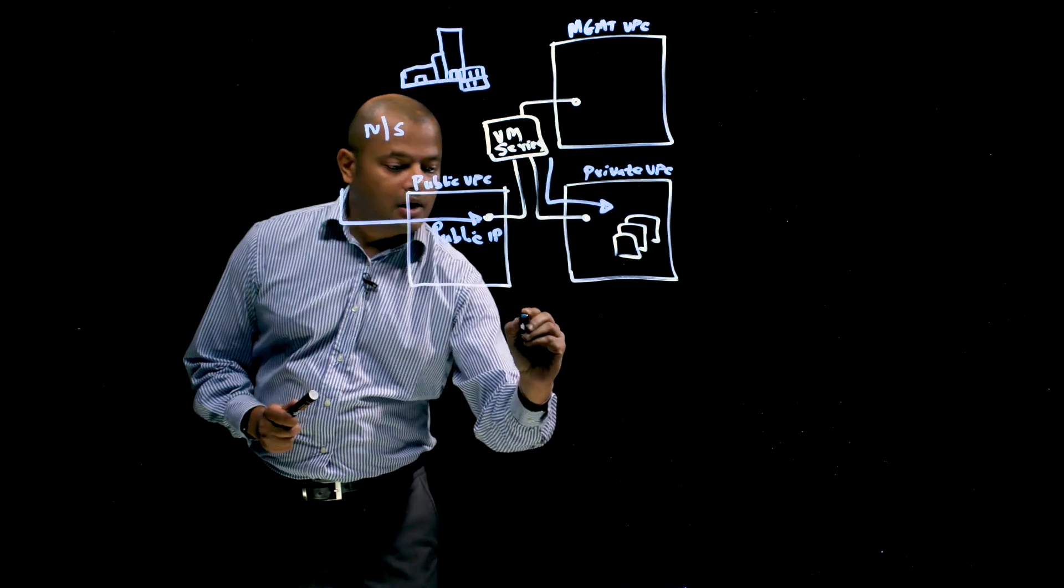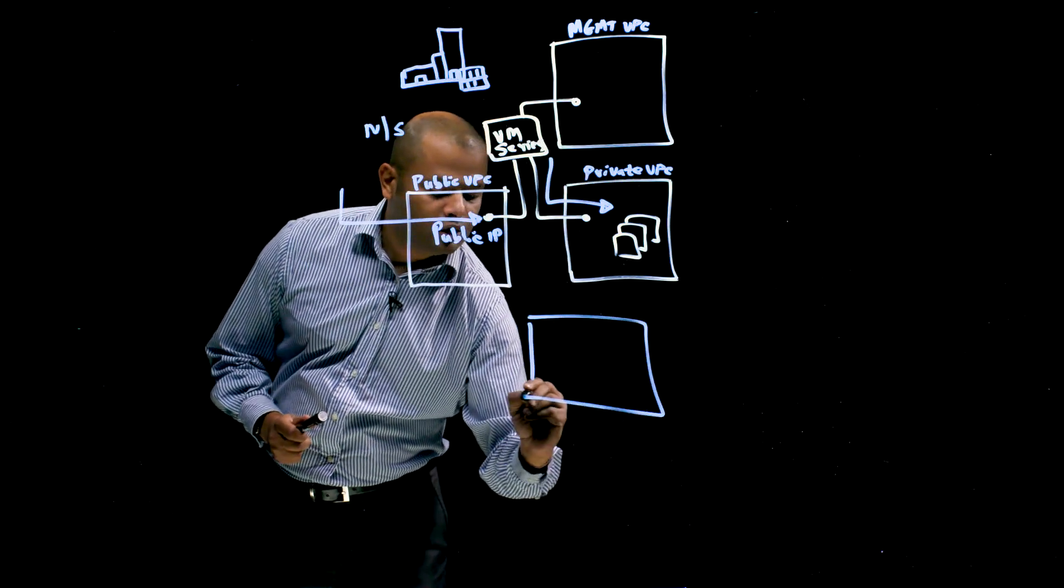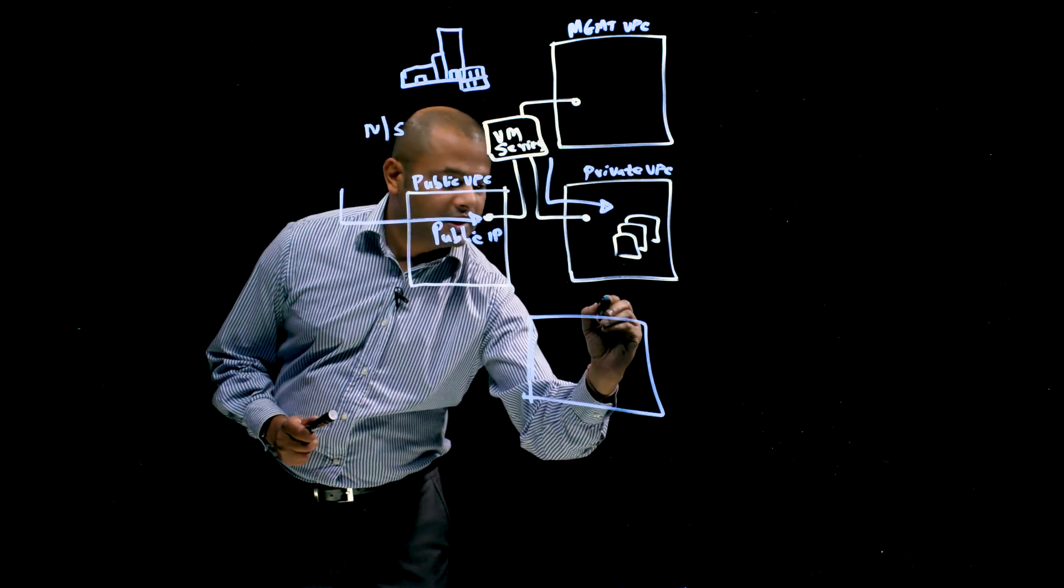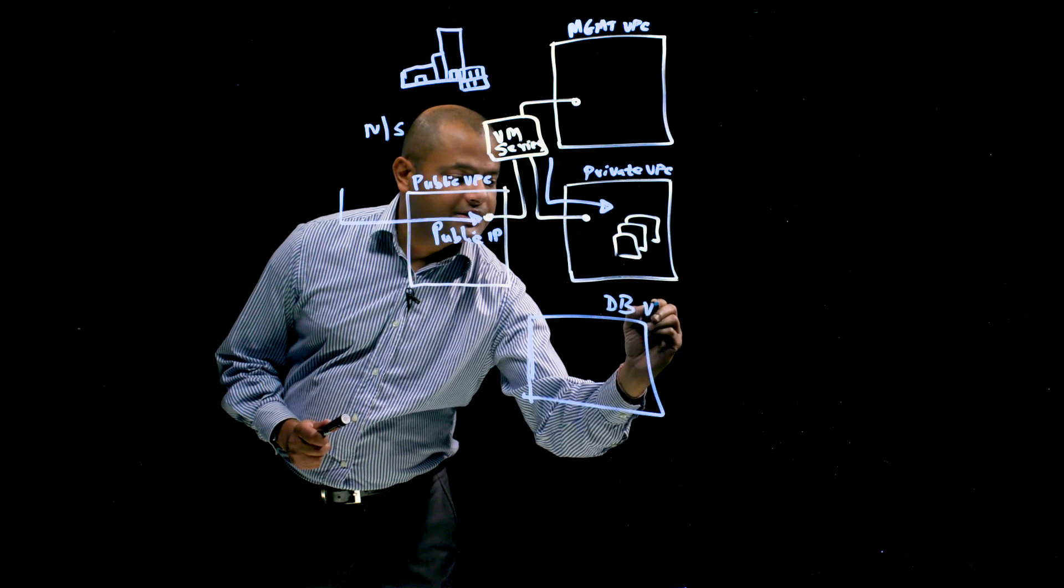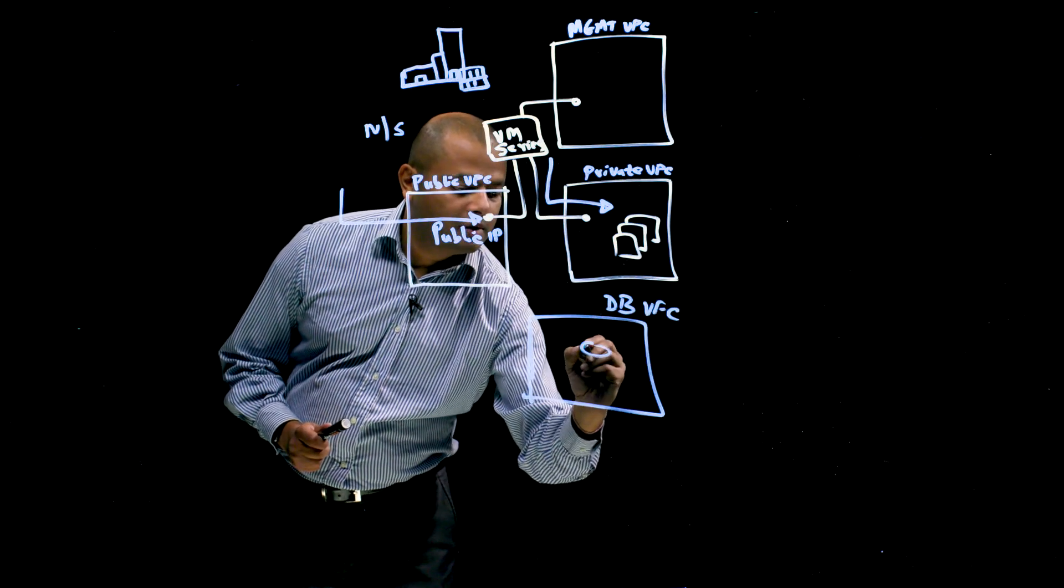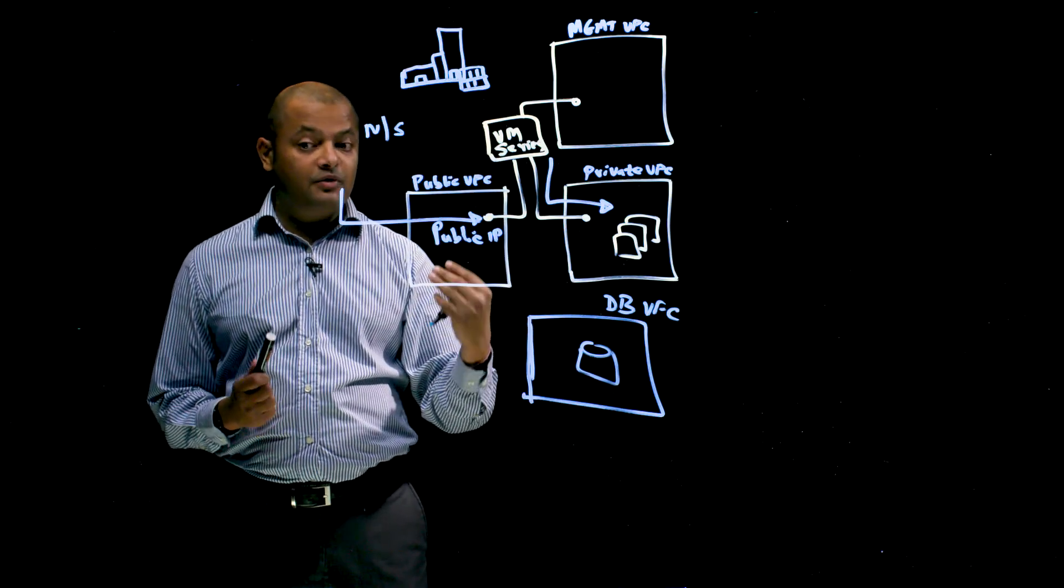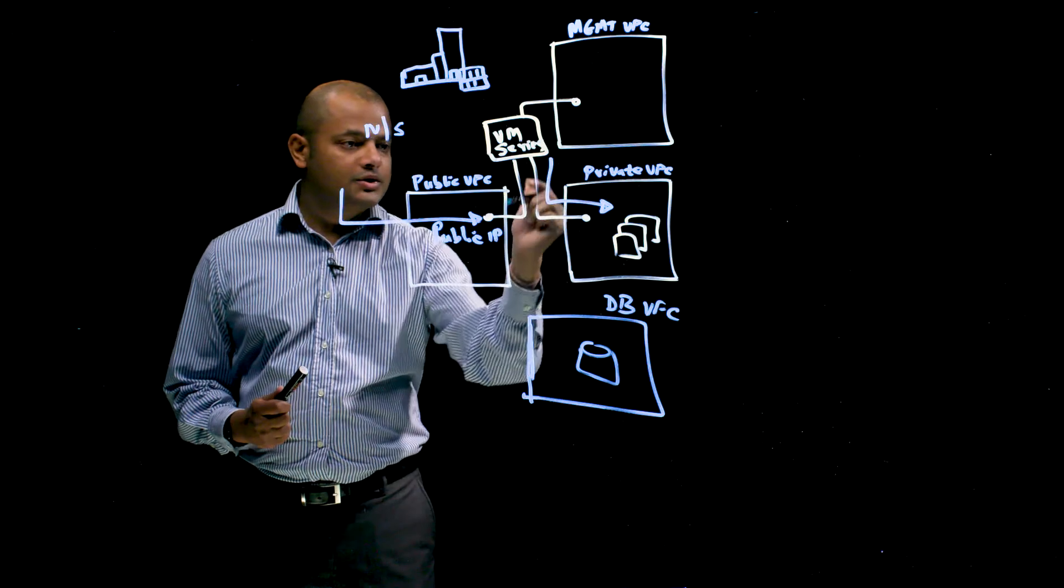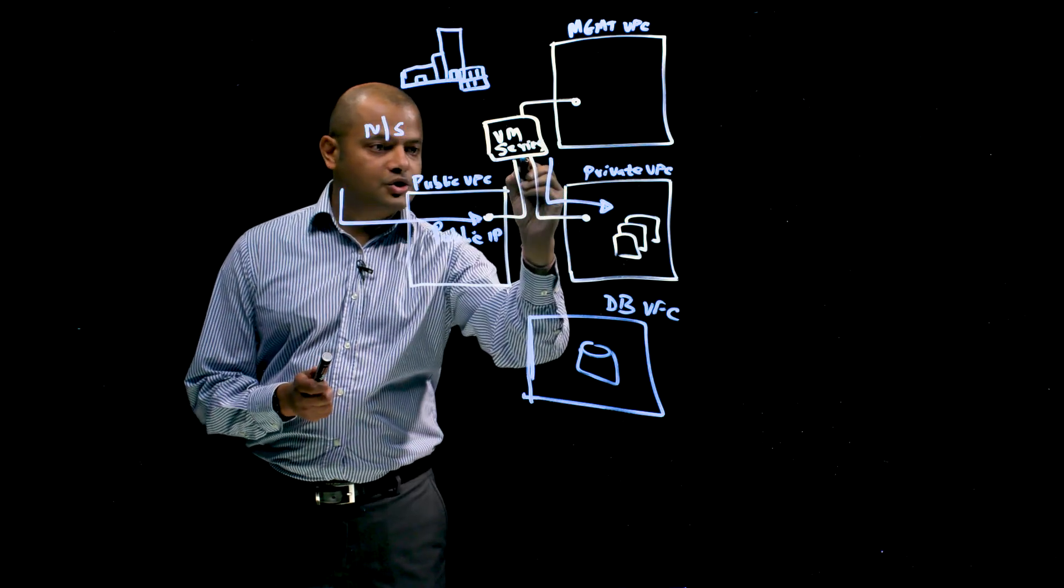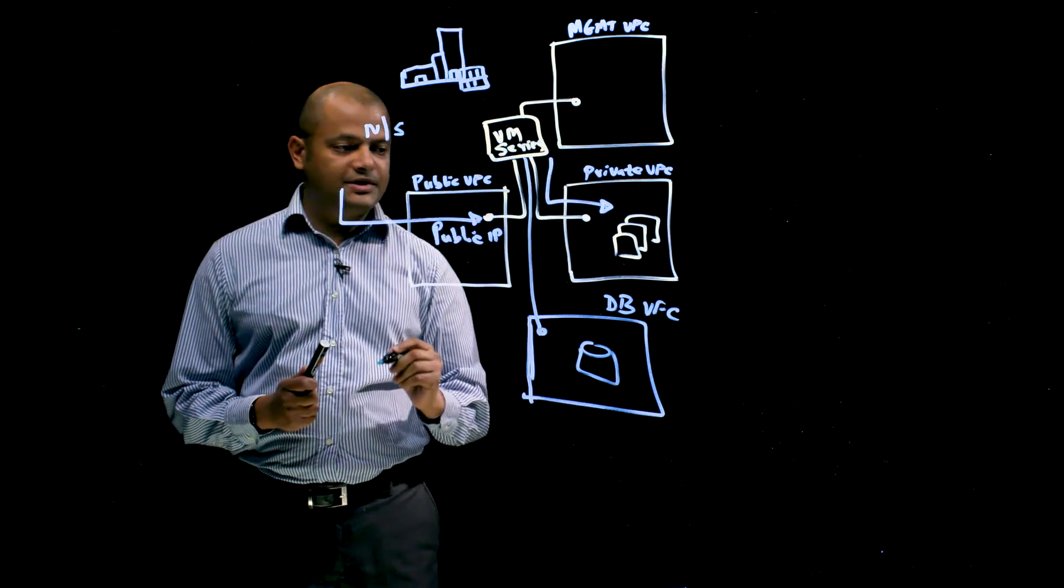You've got this deployment and you may have additional VPCs in your Google Cloud project. So let's say this is a database tier VPC. And you've got a database that is deployed out here. And you want to make sure that east-west traffic between application tiers is secure. So the firewall would have an additional interface out here in this VPC.